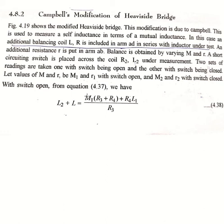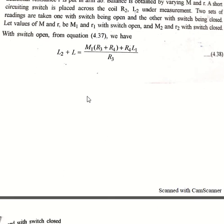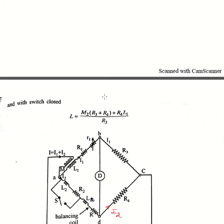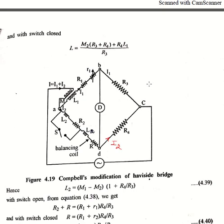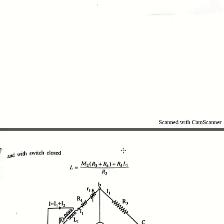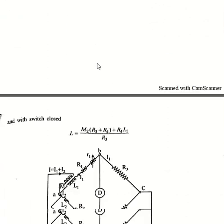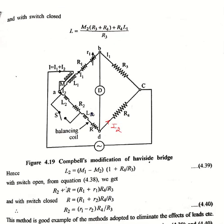This equation applies when the switch is open, and with the switch open we have the whole part as an impedance. When the switch is closed, only the balancing coil remains, so L will equal M2 multiplied by (R3 plus R4) plus R4·L1 divided by R3. If we subtract L from the first equation, we get L2 equal to (M1 minus M2) multiplied by (1 plus R4/R3).